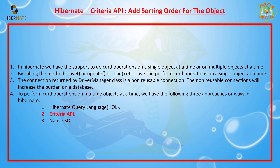Before moving into adding sorting order to a criteria interface reference object, let's understand why criteria comes into the picture. In Hibernate we have support to do CRUD operations on a single object or on multiple objects. For single object operations there are methods like save, update, and load. If you want to do operations on multiple objects at a time, we use HQL, Criteria API, or Native SQL — that's why Criteria API comes into the picture.